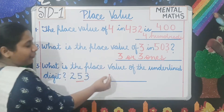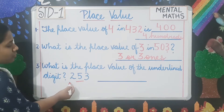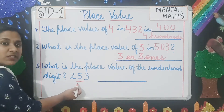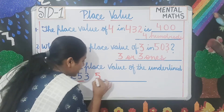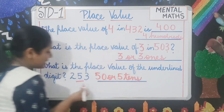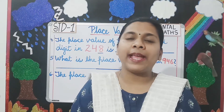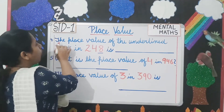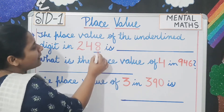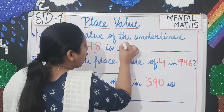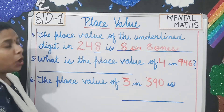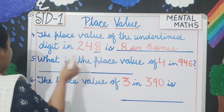What is the place value of the underlined digit in 253? The underlined digit is 5. The place value of 5 is 50, or 5 tens, because it is in the tens place. Next, number 4: the place value of the underlined digit in 248 — what is the place value of 8? It is 8 or 8 ones, because it is in the ones place.